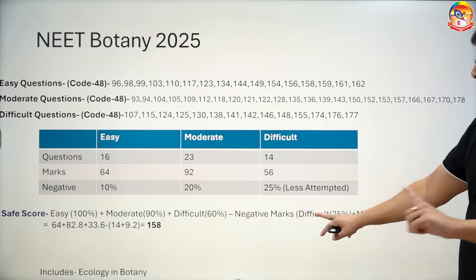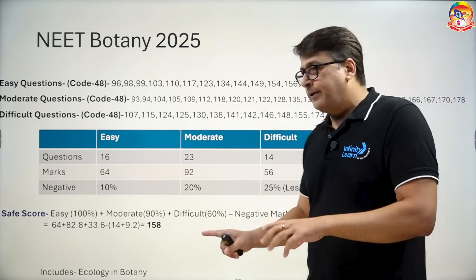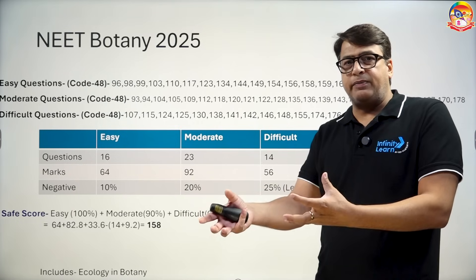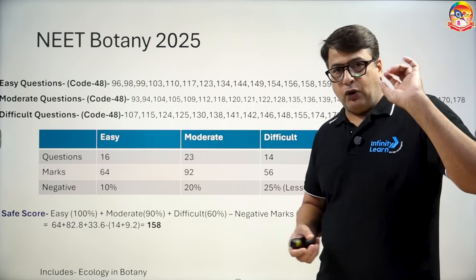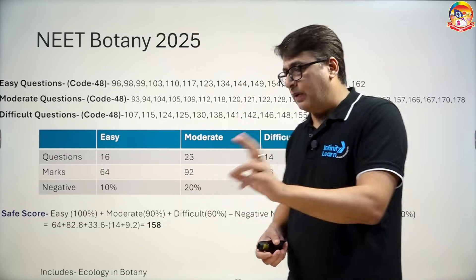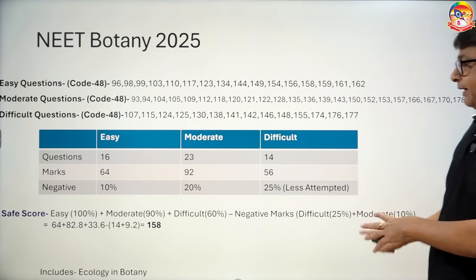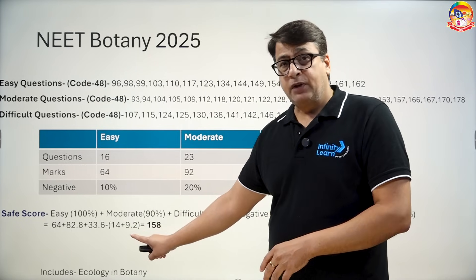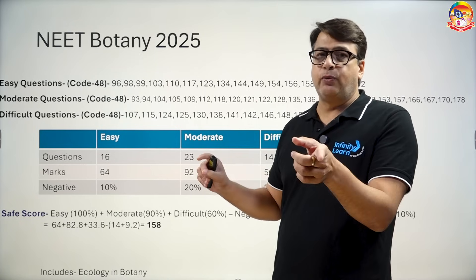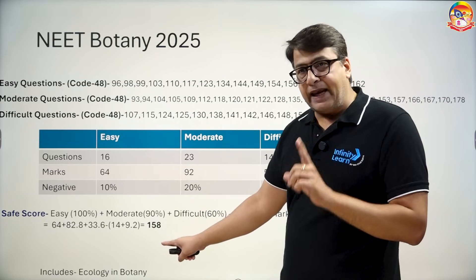For negative marking: we have taken 25% of the difficult level as negative marks. The reasoning is that if there are 14 difficult questions and you solved at least 9, the remaining questions you may have attempted incorrectly. So we take 25% of difficult as negative marks and 10% of moderate as negative marks, which comes to 14 and 9.5 respectively. The safe score specifically in botany is 158, because the number of questions is higher due to ecology topics being added.